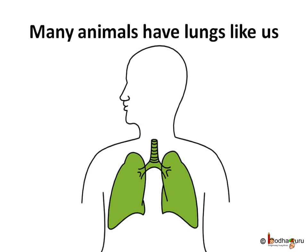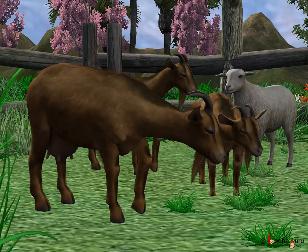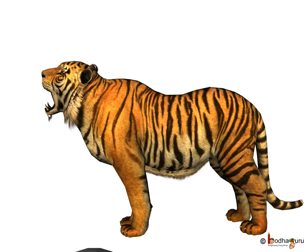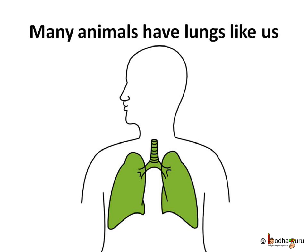Let us find it out. Many other land animals have lungs like humans. For example, all the mammals — that is, all the animals which give birth to young ones — say cow, goat, lion, tiger, etc. Even the reptiles, amphibians, birds, etc. have lungs in their chest cavities, just like us.